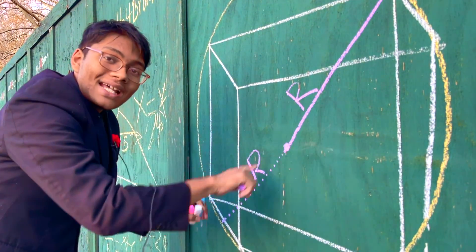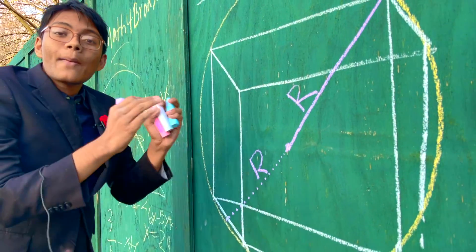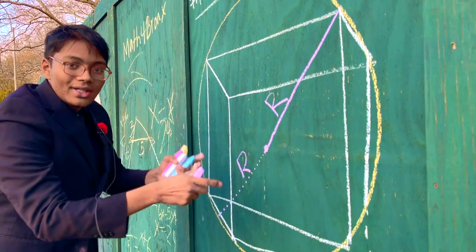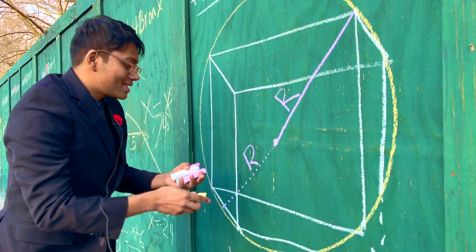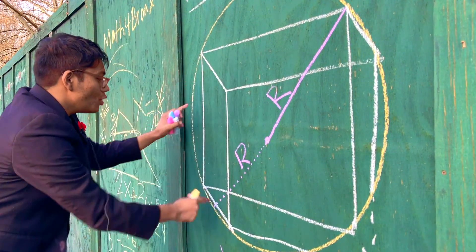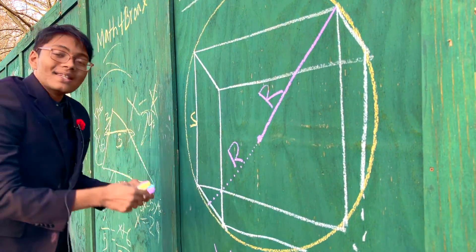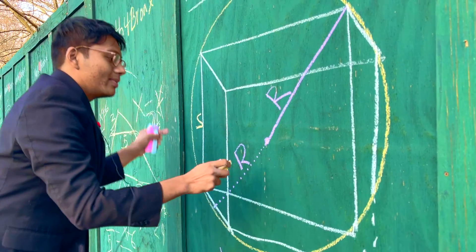And if we know the diameter of the sphere, then we know the biggest diagonal within our cube. And so what significance does that have? Well, if the cube has a side length of s, then the biggest diagonal in the cube is going to be what?